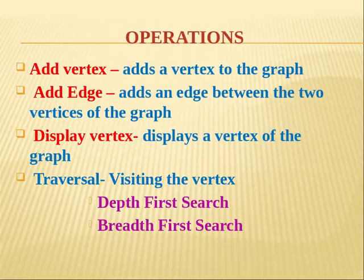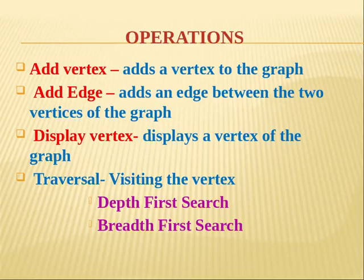Now, what are the commonly used operations on a graph? First is add vertex — to add a new vertex to the graph. Then add edge — to create an edge between two vertices. Display vertex will display all the vertices available in the graph. Then the next very important operation is traversal — how to visit or travel through the graph. There are two types: depth-first search traversal and breadth-first search traversal.